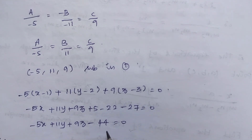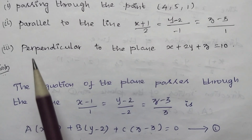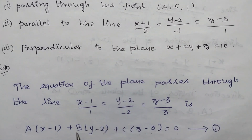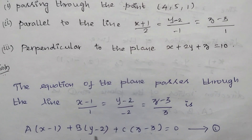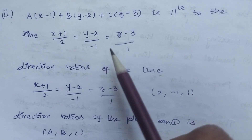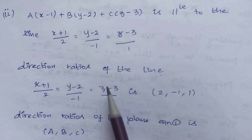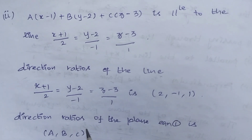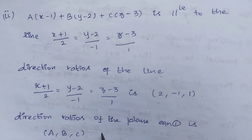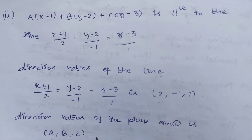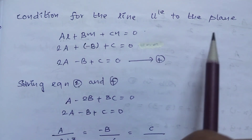Now for Subdivision 2: the required plane is parallel to the given line. The line's direction ratios are 2, -1, 1. The condition for a line parallel to a plane is: 2A - B + C = 0. Name this equation 4.